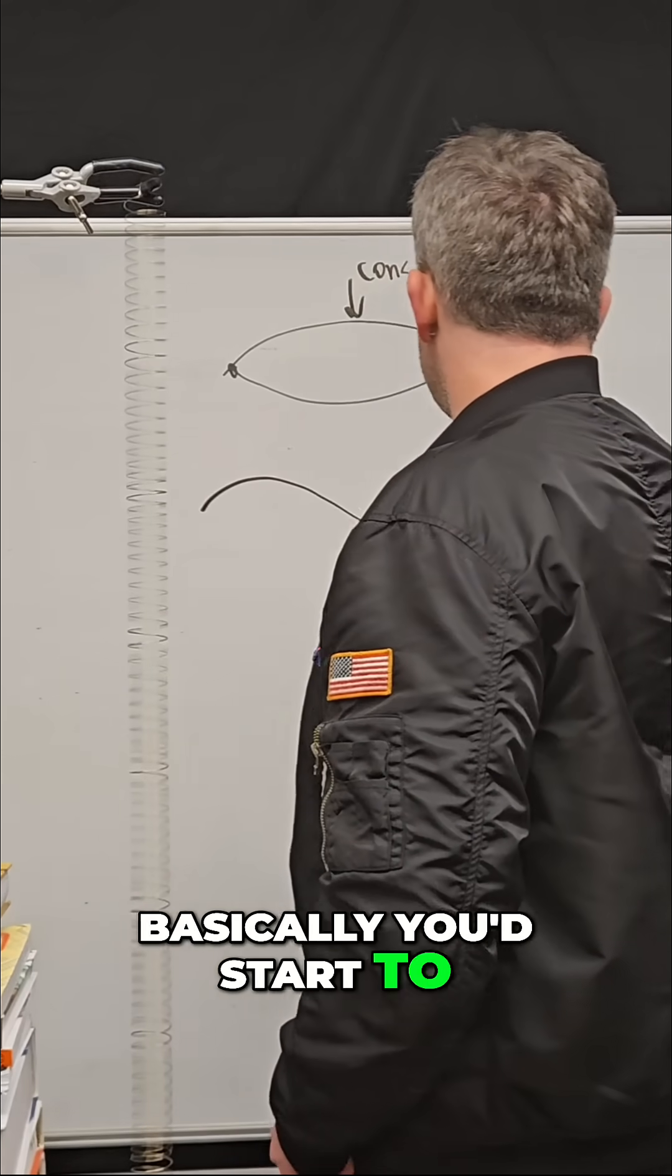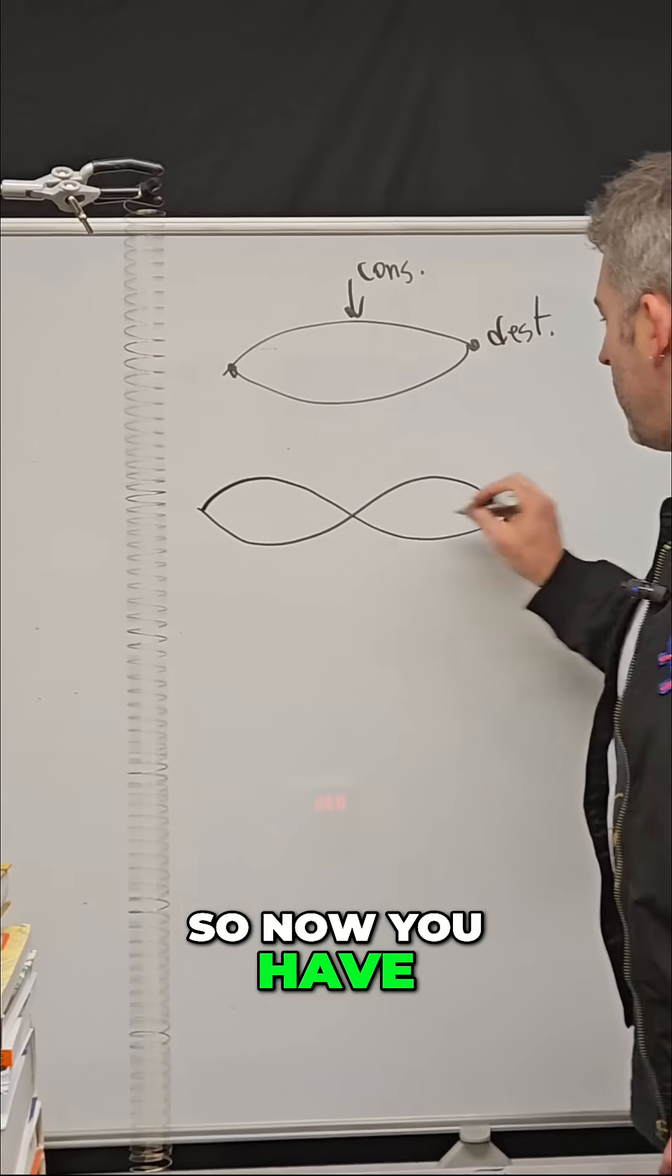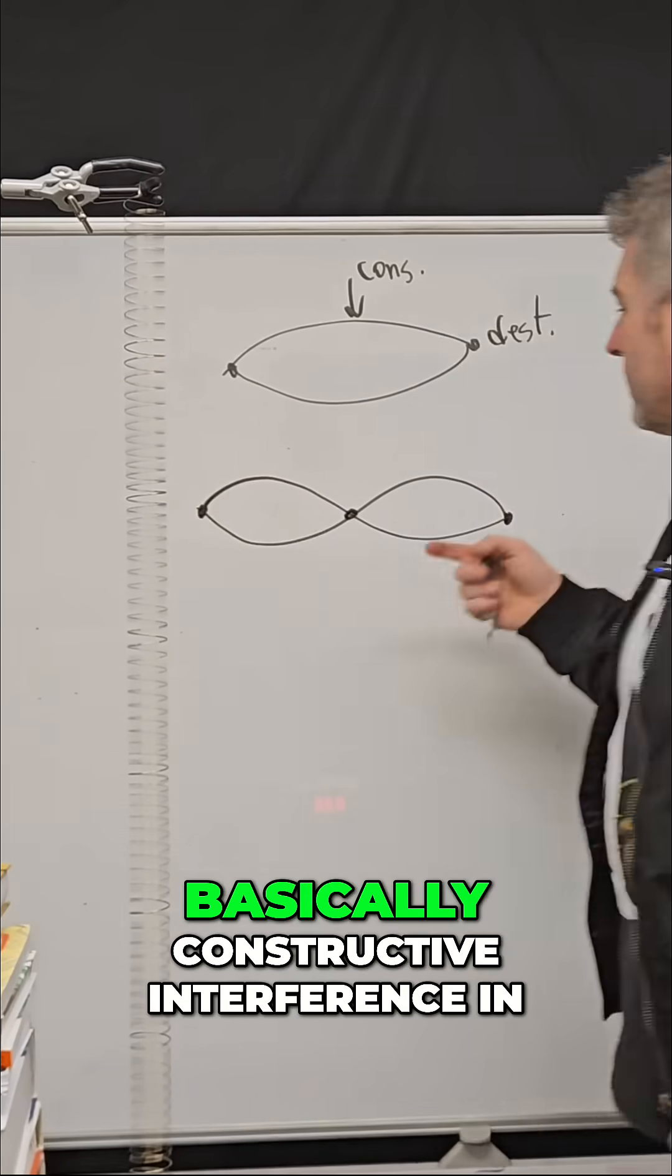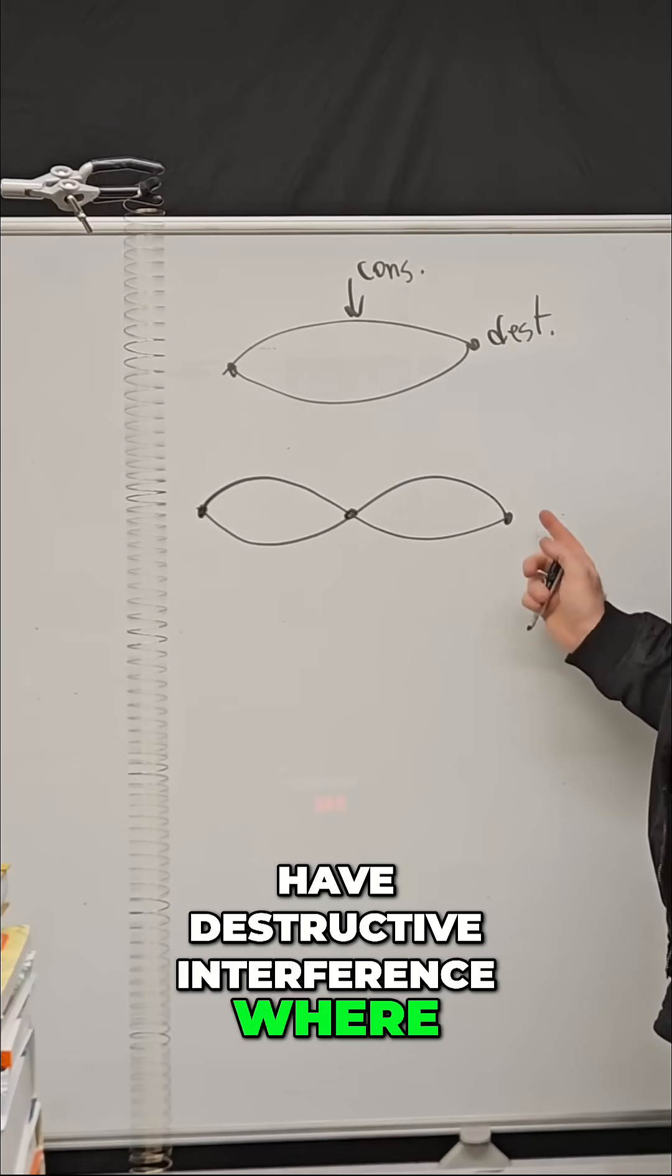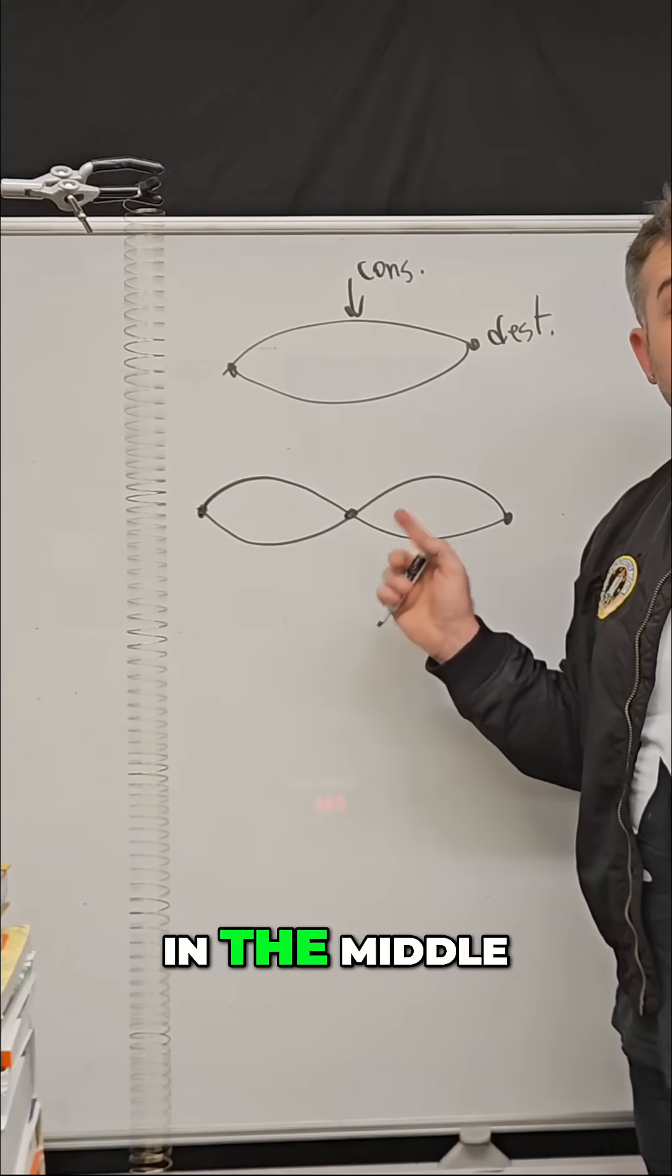basically you'd start to get a shape that looks more like this. So now you have constructive interference at two points and you have destructive interference where your hand is, where the wall is, and a new one in the middle.